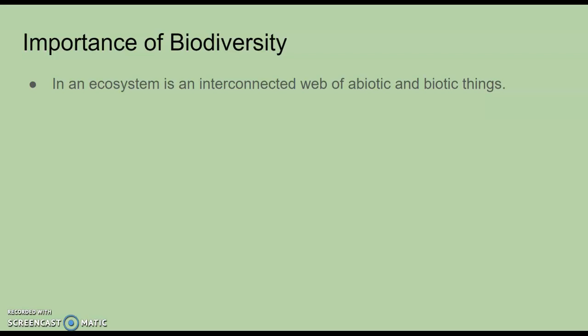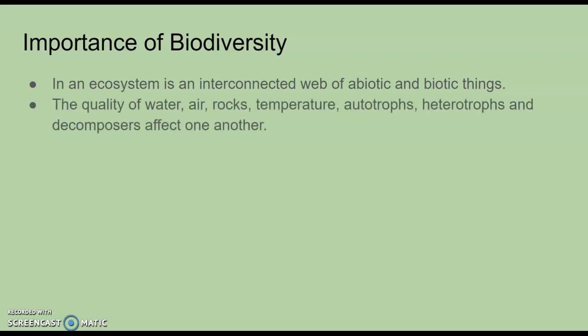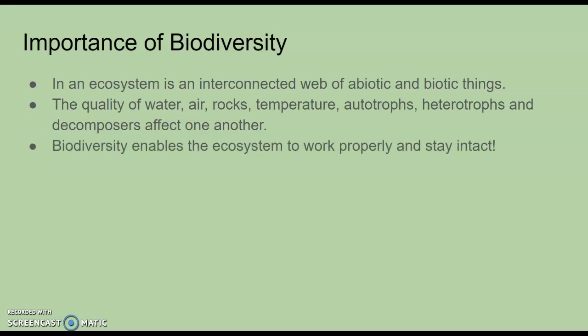An ecosystem is an interconnected web of abiotic and biotic things. Abiotic meaning non-living, biotic meaning living. For example, the quality of water, air, rocks, temperature, autotrophs, heterotrophs, and decomposers all affect one another. If one of these things is affected, it's going to affect other living and non-living things in that ecosystem. Biodiversity enables the ecosystem to work properly and stay intact.